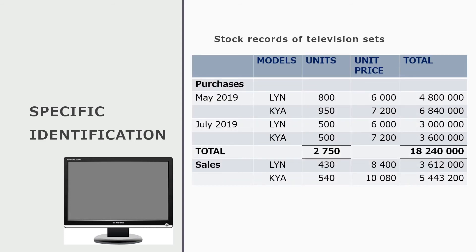Looking at our stock records for the Lynn model: during May 2019 we purchased 800 units at R6,000 each, giving a total purchase value of R4.8 million. In July, we purchased another 500 units, again at R6,000 each, totalling R3 million. During the year, we sold 430 Lynn models at a selling price of R8,400 each, meaning total sales of the Lynn model in monetary terms were R3.612 million.